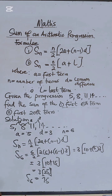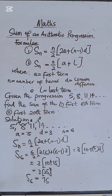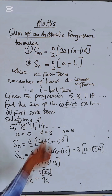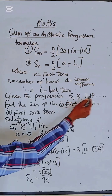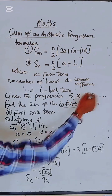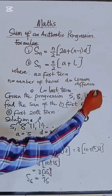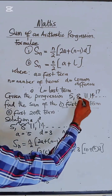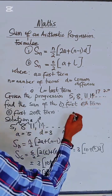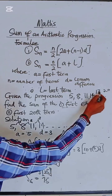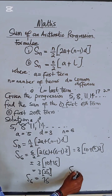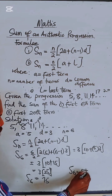To confirm whether we are right or wrong, let's list the 6 terms explicitly: 5, 8, 11, 14 — and since it's increasing by 3 — 17, and 20. That gives us 1, 2, 3, 4, 5, 6 terms. Now let's add them up: 5 plus 8 plus...